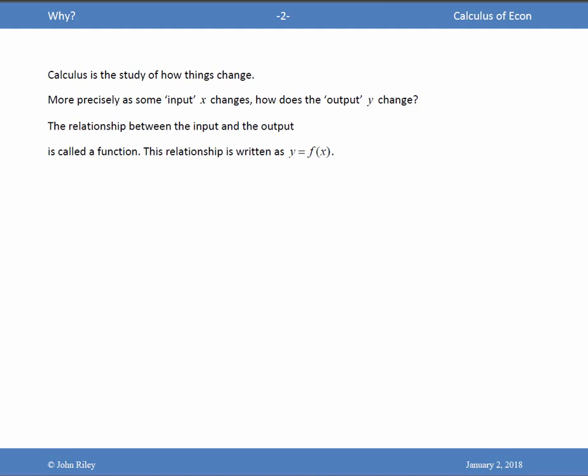as some input changes, how does the output change? The relationship between an input x and an output y is called a function, and this relationship is typically written as y equals f(x) or y equals g(x) for some general function, or possibly with a specific functional form y equals 10 plus 2x minus x squared, something like that.